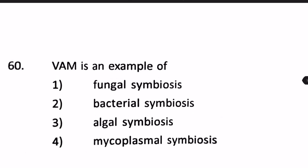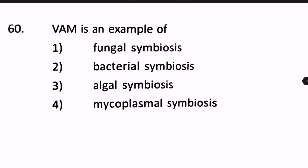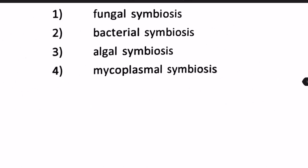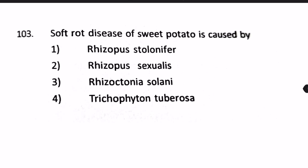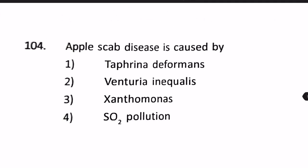VAM — herbuscular mycorrhizae — is an example of fungal symbiosis, so option A is correct. Next, soft rot disease of sweet potato is caused by Rhizopus stolonifer — not Rhizopus sexualis, Rhizoctonia solani, or Trichoderma. Rhizopus stolonifer is the genus that causes soft rot.